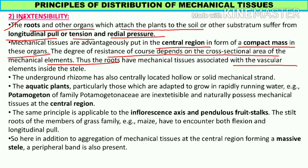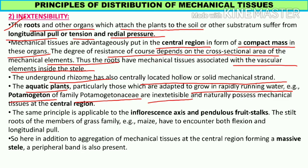Roots mein jo mechanical tissues ka organization hai, jo central compact mass mein hota hai. Degree of resistance depends on the cross-sectional area of the mechanical elements. The roots have mechanical tissue associated with the vascular elements inside the stele. They behave just like a bundle of sticks. In aquatic plants adapted to grow in rapid running water, like Potamogeton of the family Potamogetonaceae, extensible and naturally possess mechanical tissues at the central region.